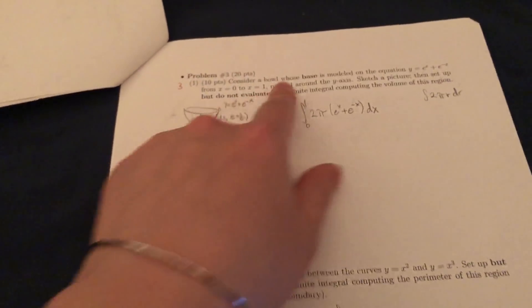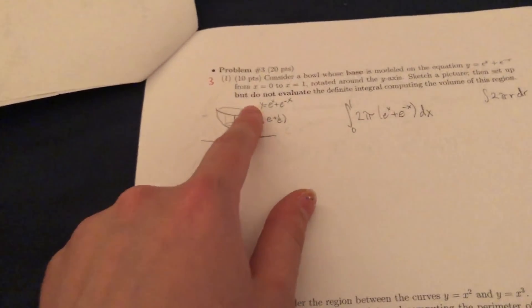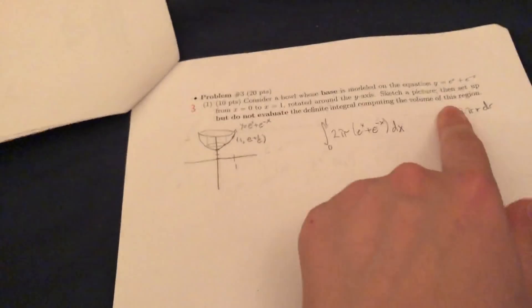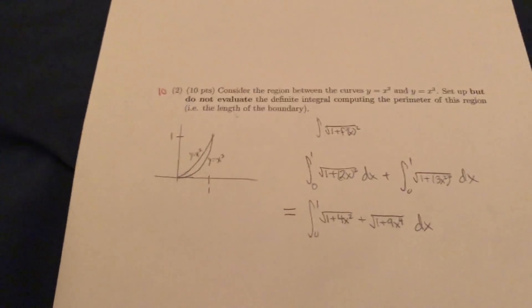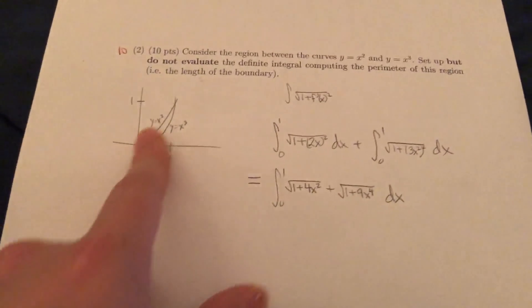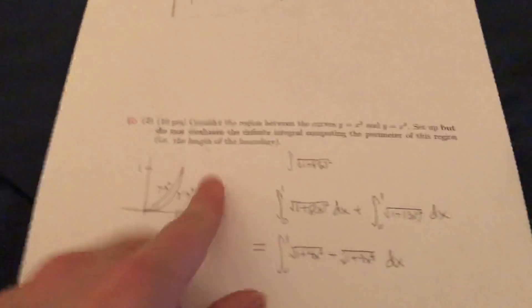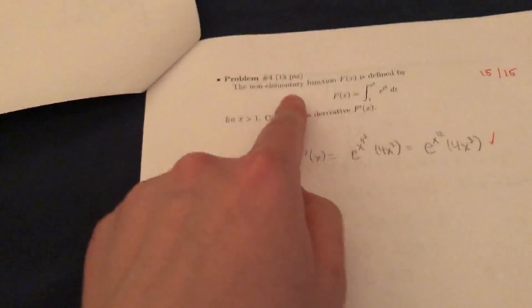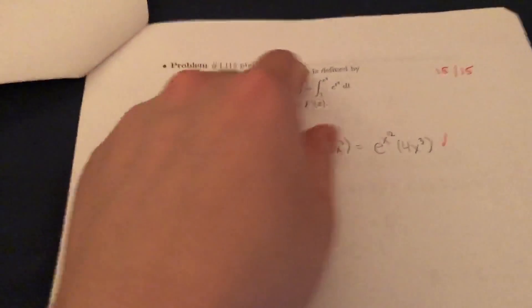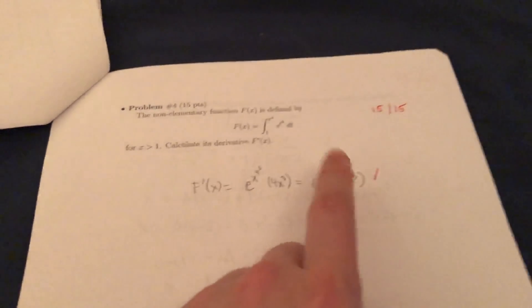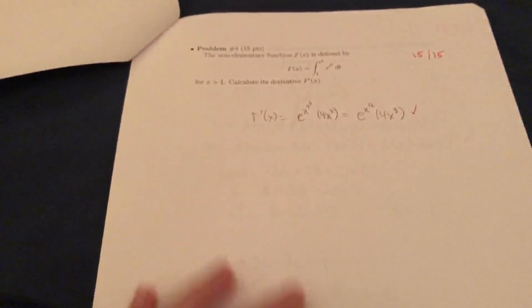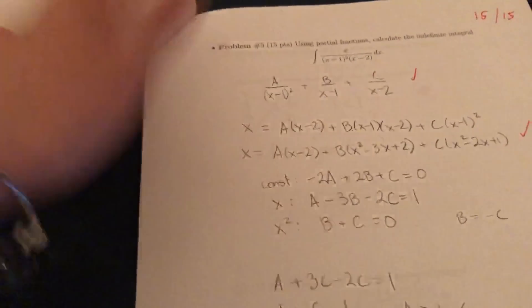All right. Next problem. Consider a bowl whose base is modeled on the equation this. So another one of these do like set up, but do not evaluate. Looks like I actually did this one. Okay. And then this one, another one of those set up, but do not evaluate. So that's good. And this one, non-elementary function, calculate the derivative. So you calculate the derivative of that. Looks like I did that one fine. I don't know why they gave so much space for this problem. Could do it in one line.